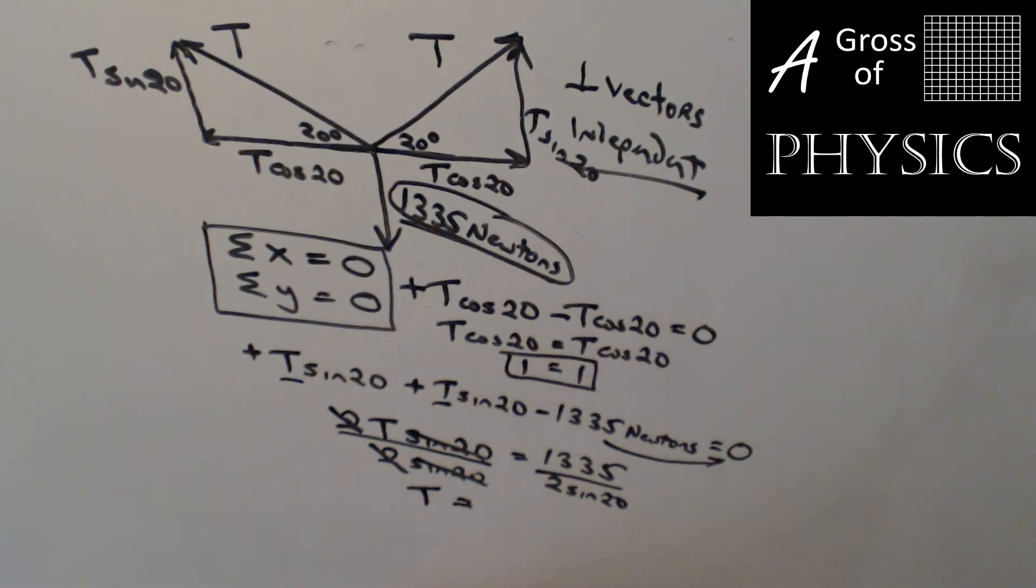And I'm left with t equals, well my answer. 1335 divided by parentheses 2 times sine 20 close parentheses. And then close them again. And I get 1951.64 newtons.